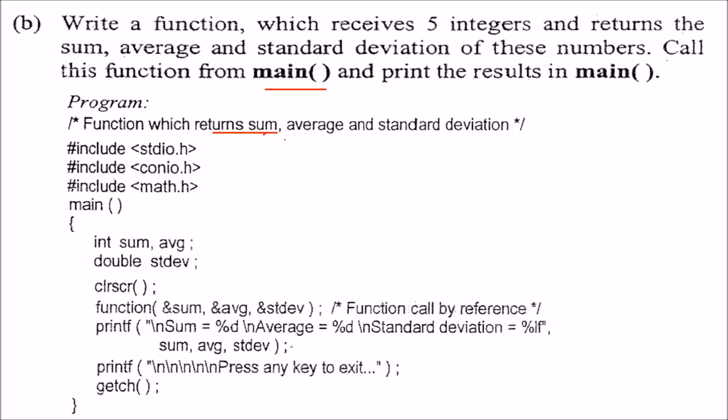We have to find the sum, average and standard deviation. Sum is simply adding the numbers, average is adding them and dividing by the number of candidate values, and this is the standard deviation. Standard deviation is simply take every value, subtract it from the average, square it and add them all and then take a square root.